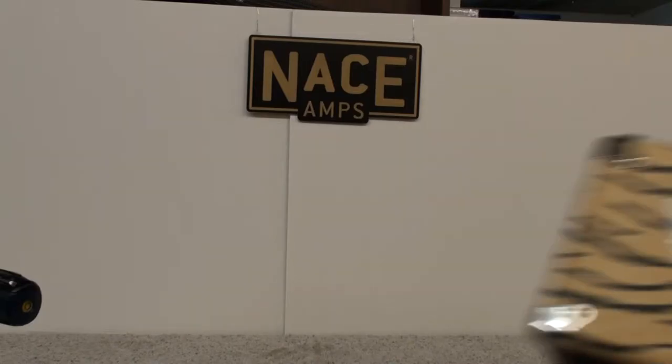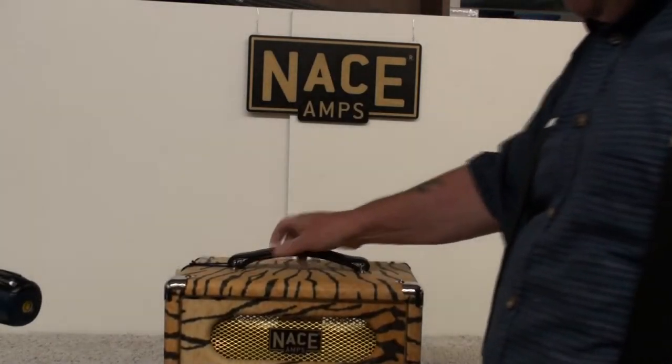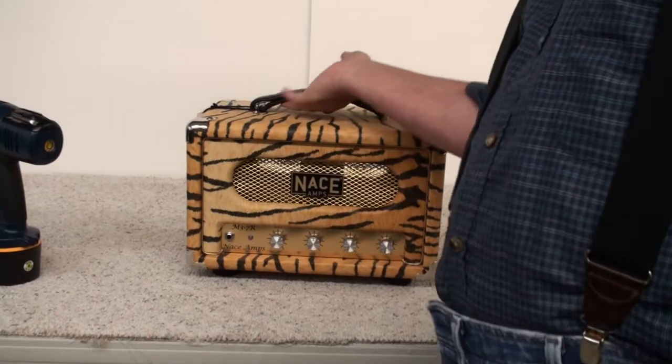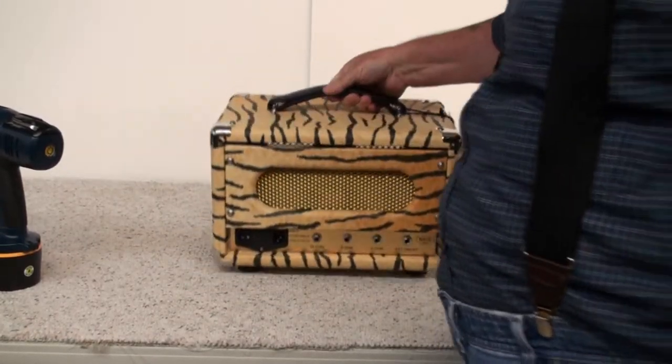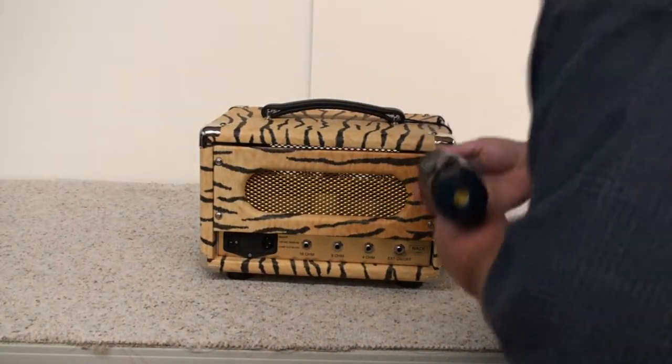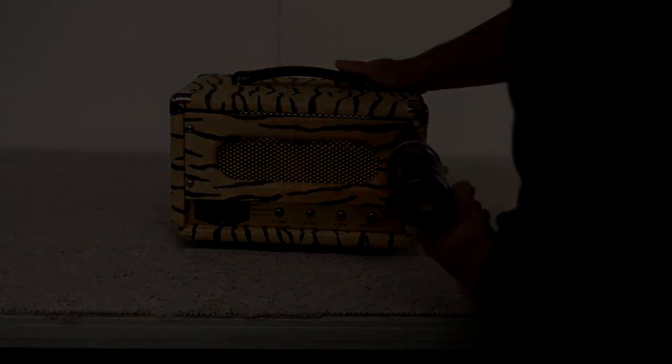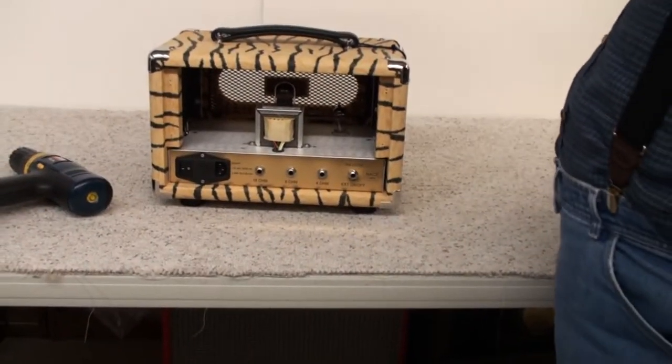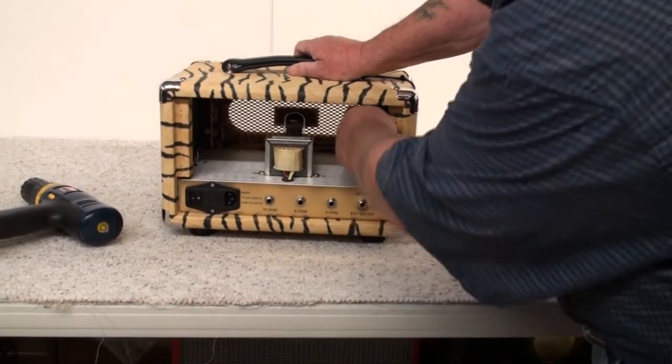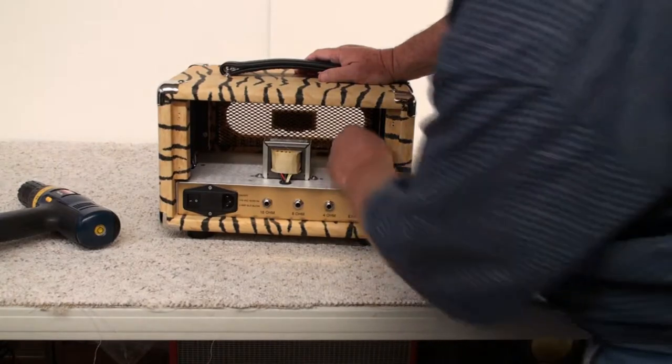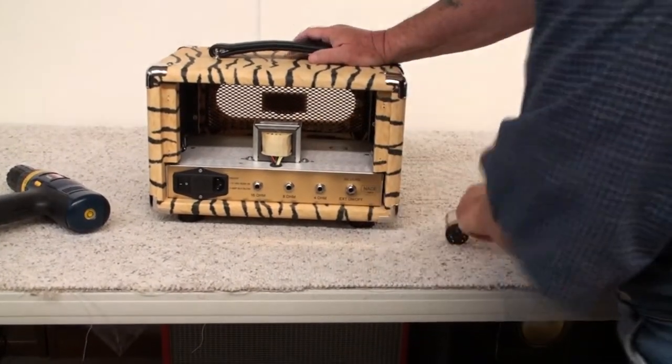Next, we're going to do a head unit. So here we have a head unit that we're going to change the tubes out in. Now this one, we have to take the back off. We get our screwdriver. Now we've got the back off and we can see the two tubes inside. We're going to take them out. Gently rotate and pull out.